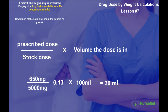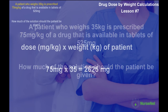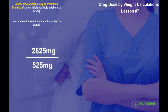Finally, we'll do a calculation for an oral dosage in the form of tablets. A patient who weighs 35 kilograms is prescribed 75 milligrams per kilogram of a drug available in tablets of 525 milligrams. How many tablets should we give? Using the dose by patient weight formula: 35 kilograms multiplied by 75 milligrams per kilogram gives a prescribed dose of 2,625 milligrams. Each tablet is 525 milligrams, so 2,625 divided by 525 gives us 5 tablets.